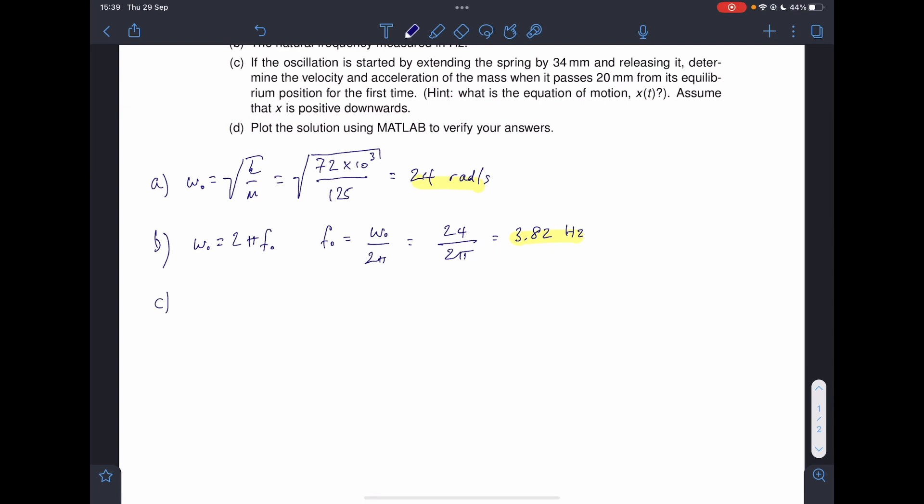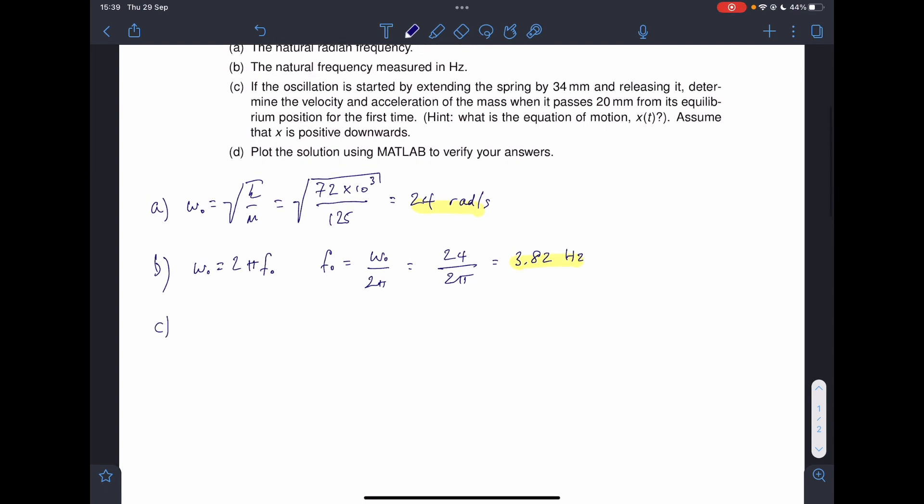Now for part C, it says, hint, what's the equation of motion x of t? Well, it's going to be a sinusoid, because the thing oscillates. It's undamped, so it's not going to decay. But sinusoids always have an amplitude. Cosine will give me a sinusoid shape. And I've got a frequency, times by time, plus a phase, which will shift it left and right. Any sinusoid that's centred around 0 can be written like this. There's another way you can write it, but that's the way I'm going to write it here.